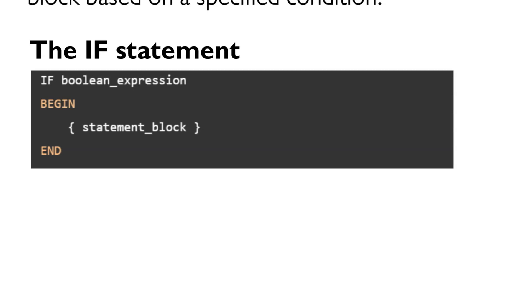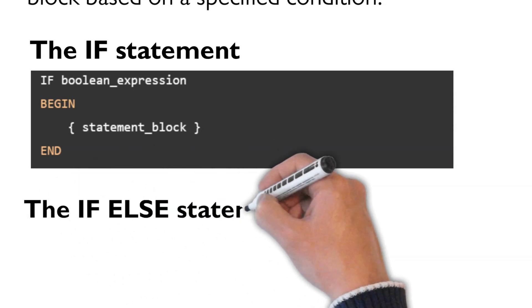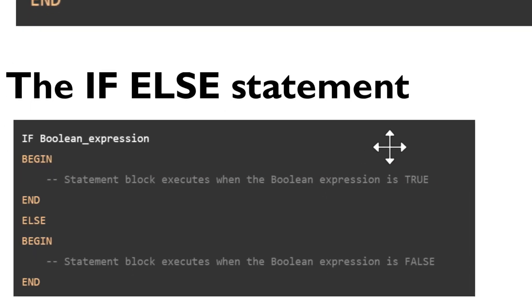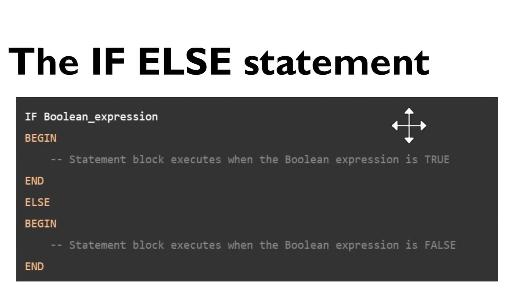When the condition in the if clause evaluates to false and you want to execute another block, you can use the else clause. Each if statement has a condition. If the condition evaluates to true, then the block statement in the if clause is executed. If the condition is false, then the block of code in the else clause is executed.